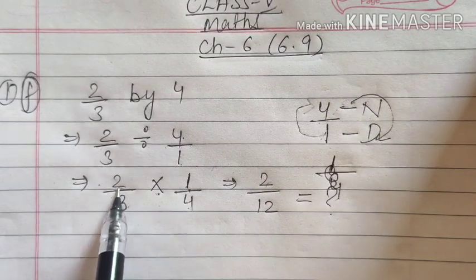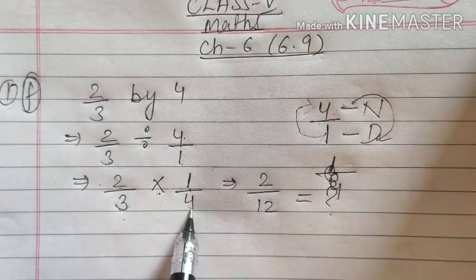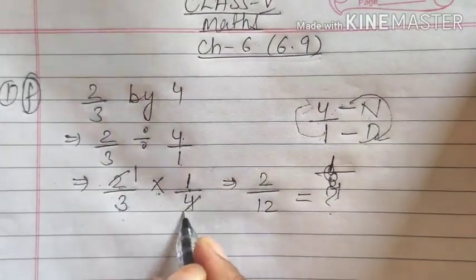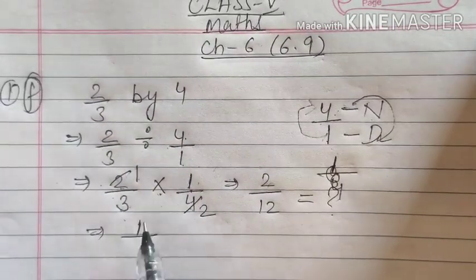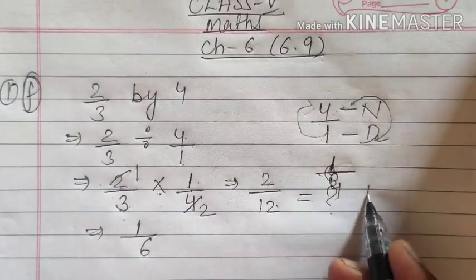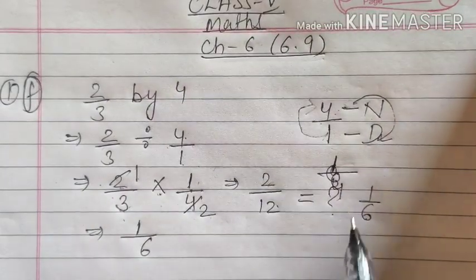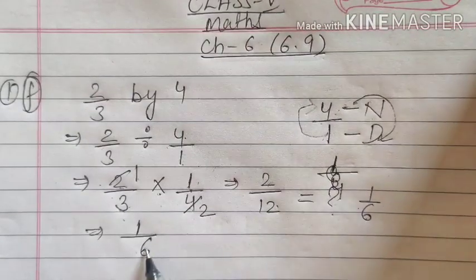But you see here, this 2 is also divisible by 2 and 4 is also divisible by 2. So 2 1s are 2 and 2 2s are 4. Likewise, now you see 1 into 1 is 1. And 3 into 2 is 6. If you will factorize this number, then also you are going to get 1 by 6 only. So in both the cases, the answer is same. It's your choice which method you want to apply.